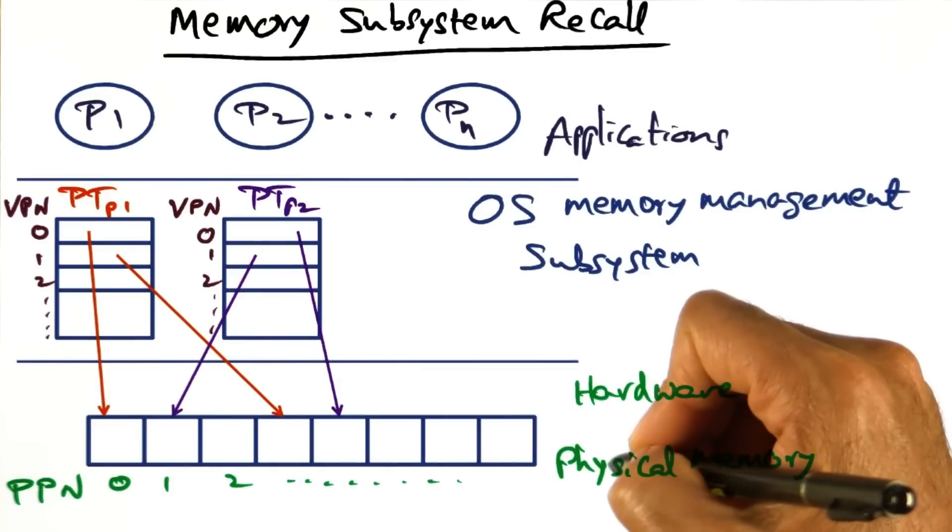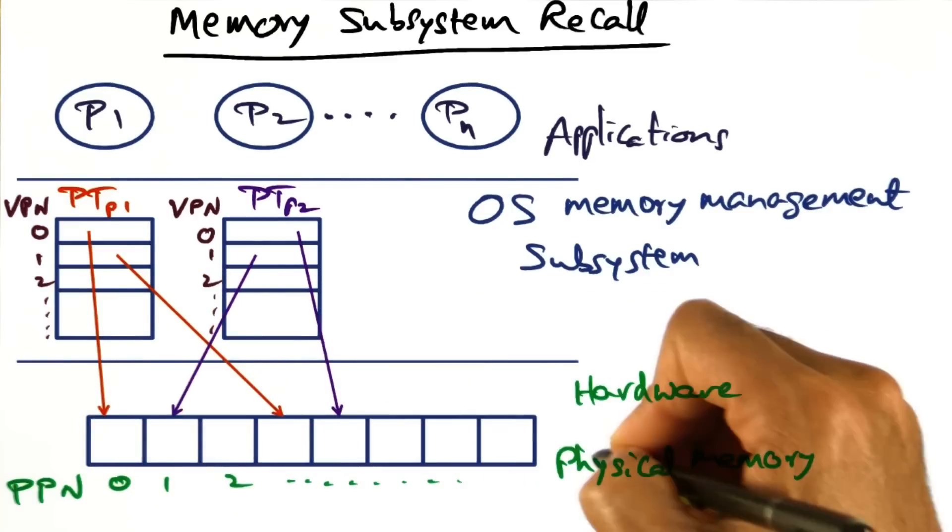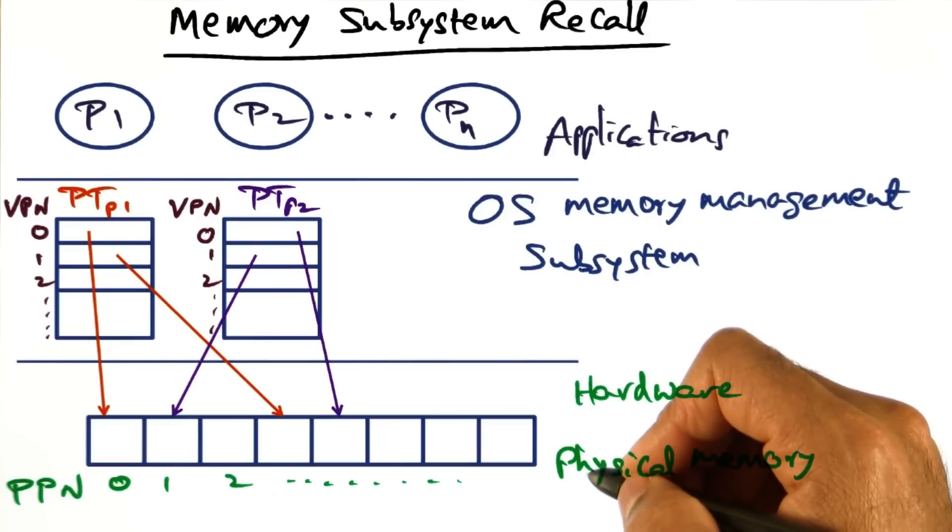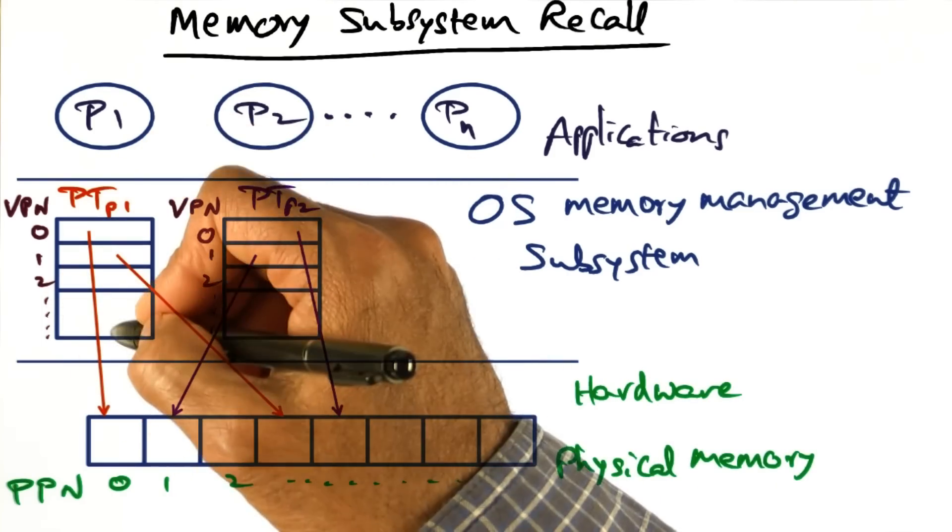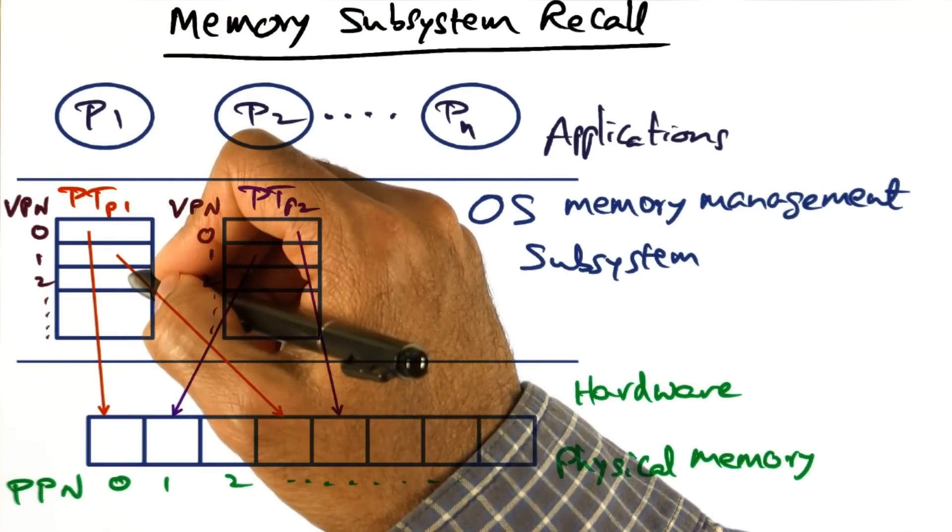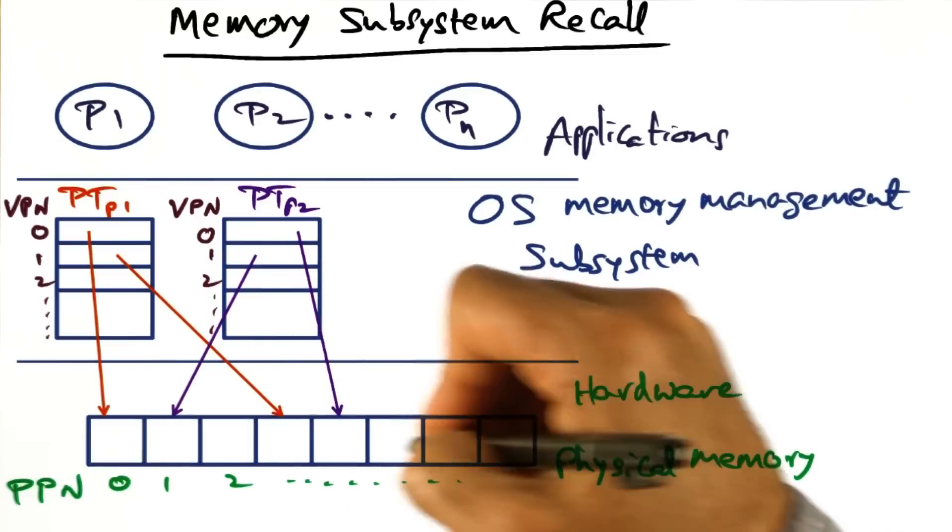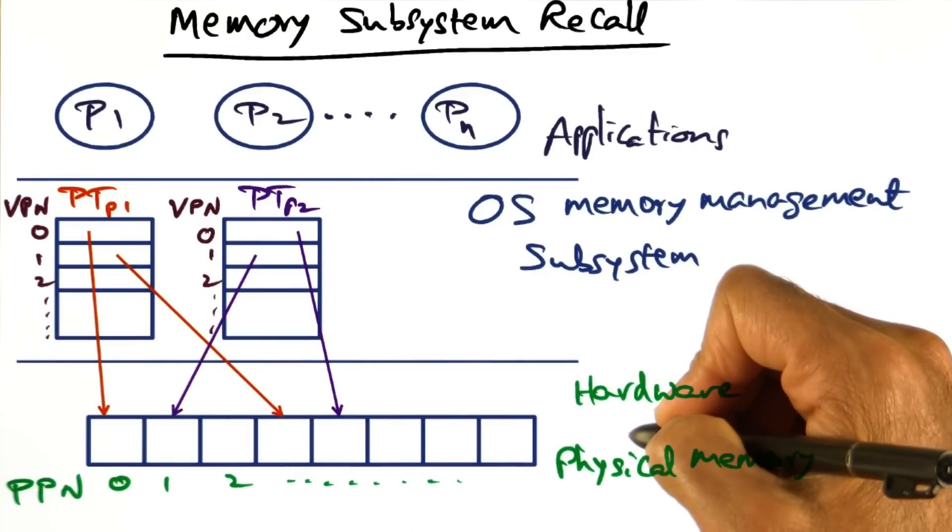The physical memory is contiguous, starting from zero to whatever the maximum limit of the hardware capabilities are. But the virtual address space of a given process is not contiguous in physical memory; it is scattered all over the physical memory.